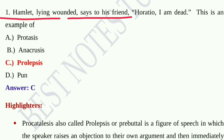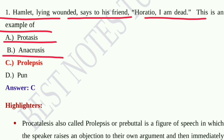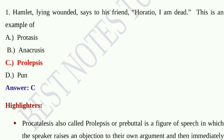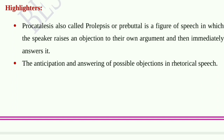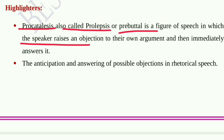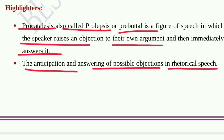Question number one: Hamlet, lying wounded, says to his friend Horatio, 'I am dead.' This is an example of option A, protasis; option B, anachrosis; option C, prolepsis; and option D, fun. Option C, prolepsis, is the correct answer. Prolepsis, also called procatalepsis or prebuttal, is a figure of speech in which the speaker raises an objection to their own argument and then immediately answers it — the anticipation and answering of possible objection in rhetorical speech.